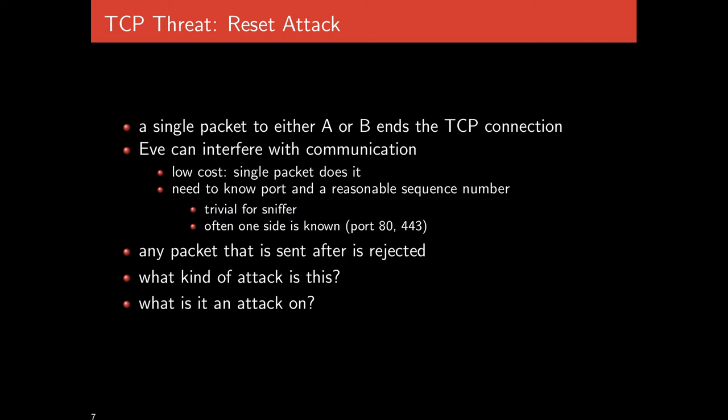This is trivial for an on-path attacker who will know the port and a reasonable sequence number — one within the window. Ports aren't meant to have a security function against reset attacks: one side is usually known — port 80 for HTTP, 443 for TLS. Whatever data is sent after a reset packet is accepted is then rejected by the TCP protocol. This is an attack on availability — a denial-of-service attack. By sending a single packet, if you can guess or know the sequence number, you can shut down communication.